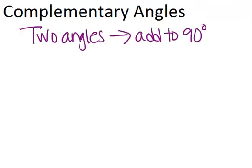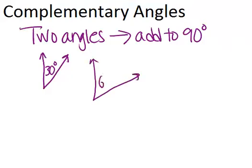It's important that there are only two angles, as opposed to three or more. For example, I could have this angle which is 30 degrees and this angle which is 60 degrees, and these two angles would be complementary because they add to 90 degrees.